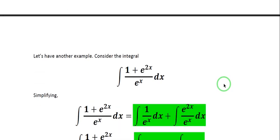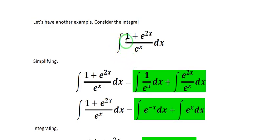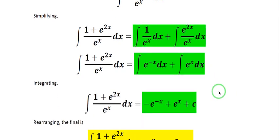For our second example, we have the integral of 1 plus e to the 2x all over e to the x dx. We can split this into the sum of two fractions: the integral of 1 over e to the x dx plus the integral of e to the 2x all over e to the x dx. Now, 1 over e to the x equals e to the negative x, and e to the 2x over e to the x simplifies to e to the x.